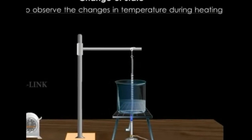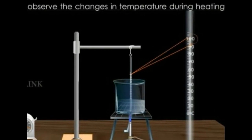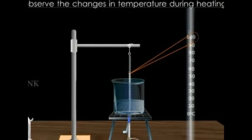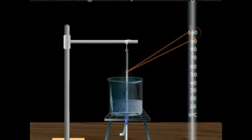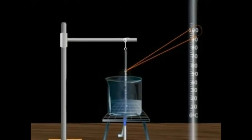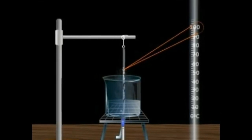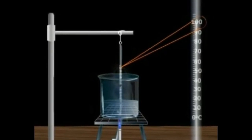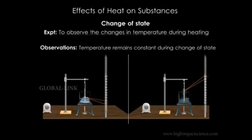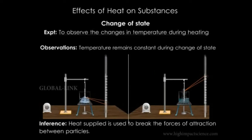We continue heating the water and observe the temperature rising. We record the rising temperature until the water starts to boil and is converted to steam. The thermometer reading remains constant at 100 degrees Celsius, the boiling point of water — there is no change in temperature. This experiment shows that temperature remains constant whenever there is a change of state. The energy supplied is used to break the intermolecular forces of attraction between the particles, so there is no increase in temperature during a change of state.